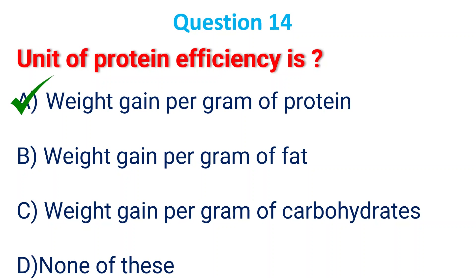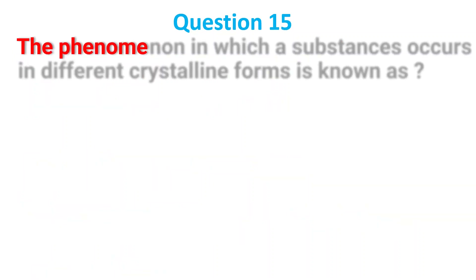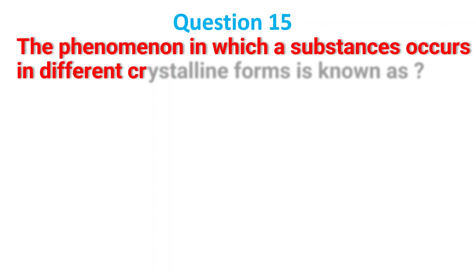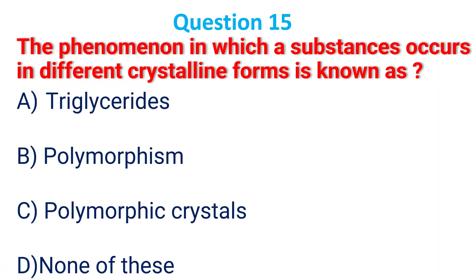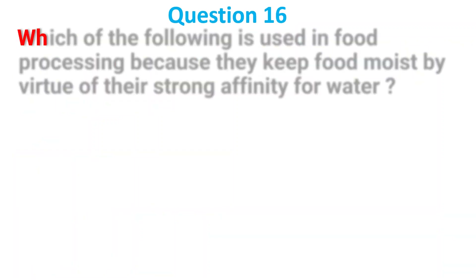The phenomenon in which substances occur in different crystalline forms is known as: A. Triglyceride; B. Polymorphism; C. Polymorphic crystal; D. None of these. The answer is B, polymorphism.